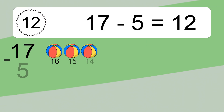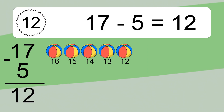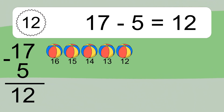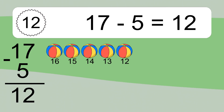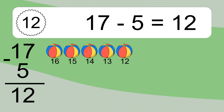17 minus 5 equals 12. Let's count it: 16, 15, 14, 13, 12. 8 minus 7 equals what?